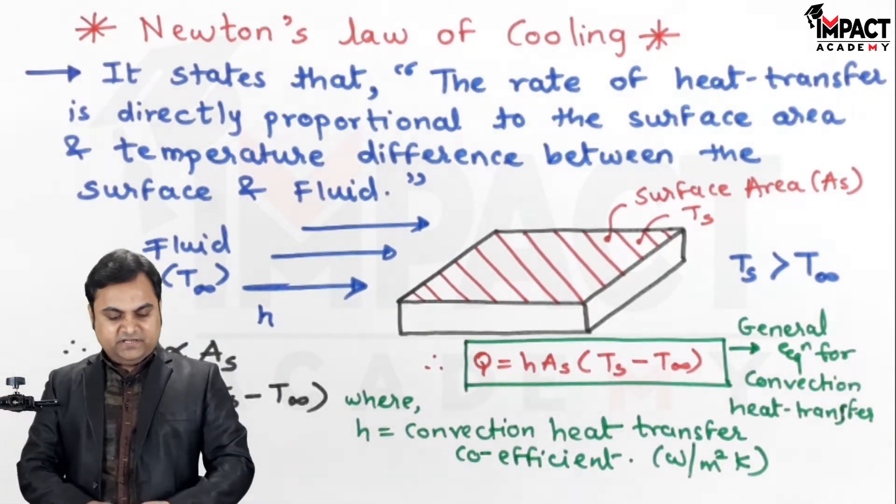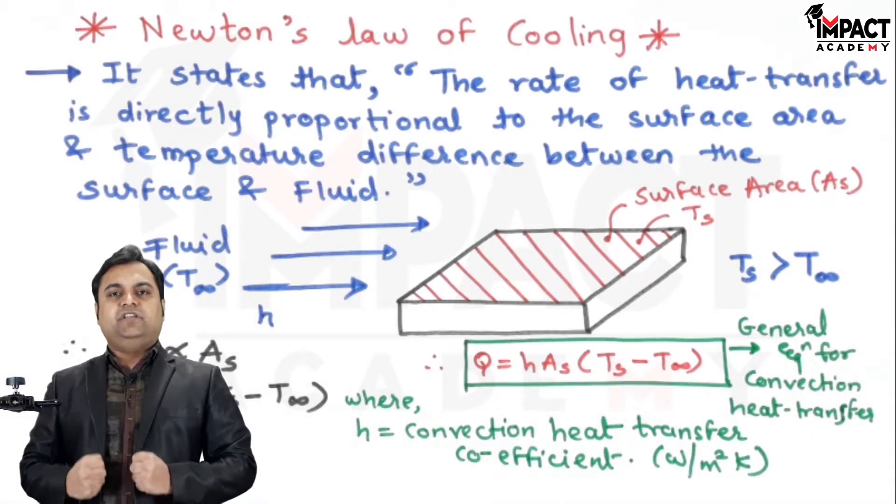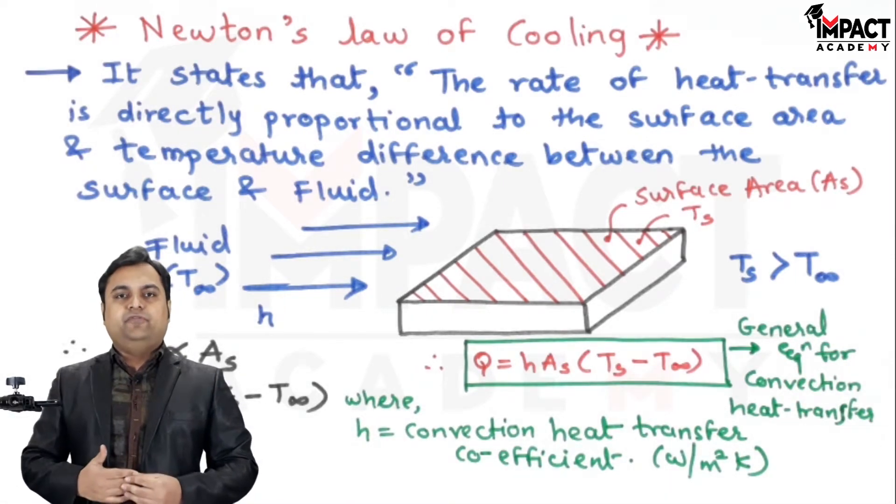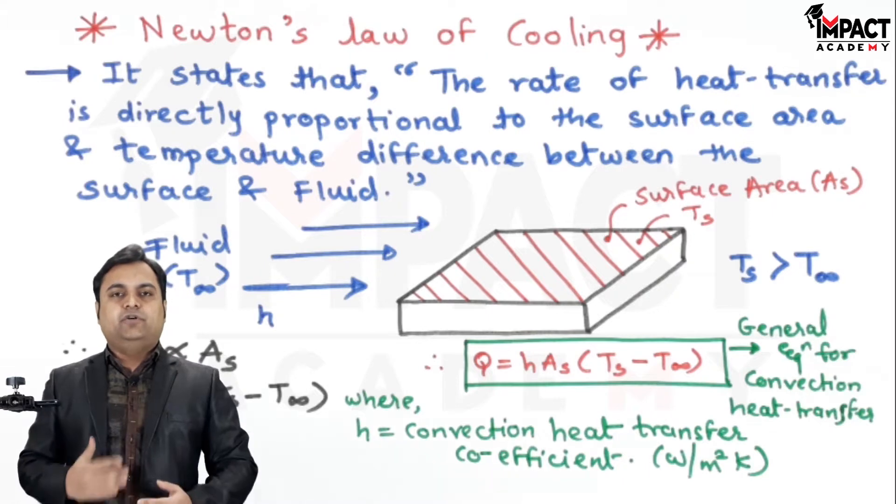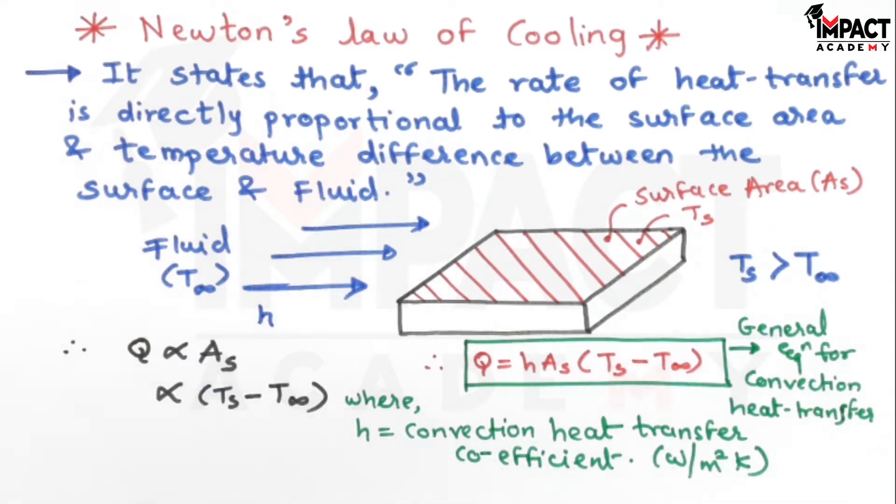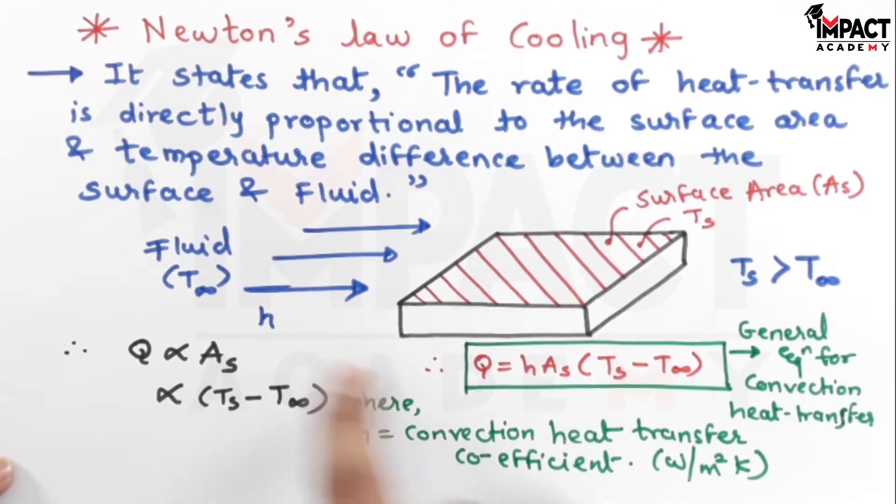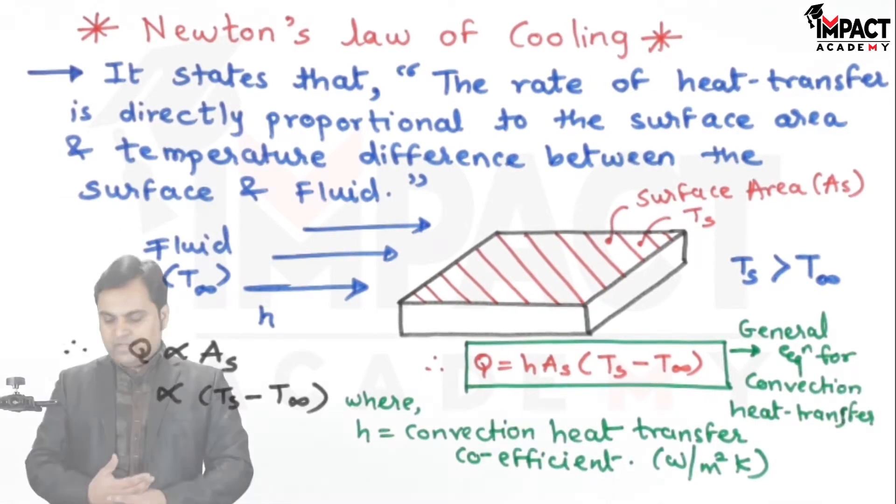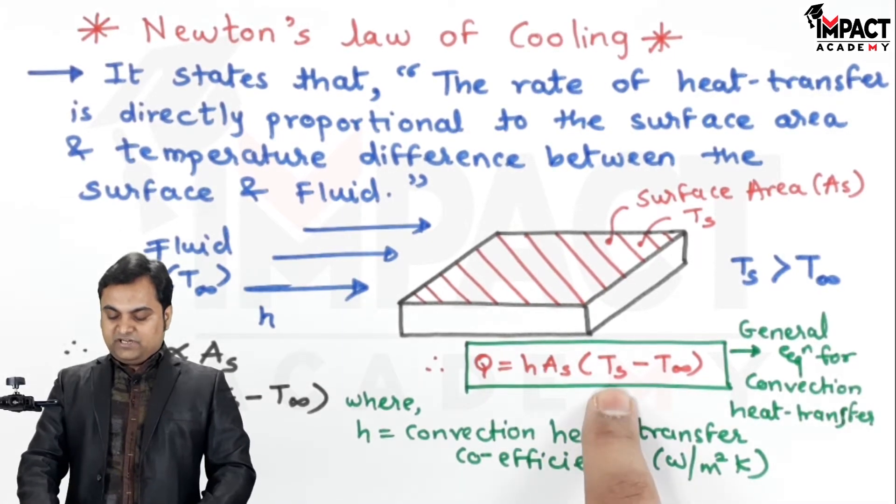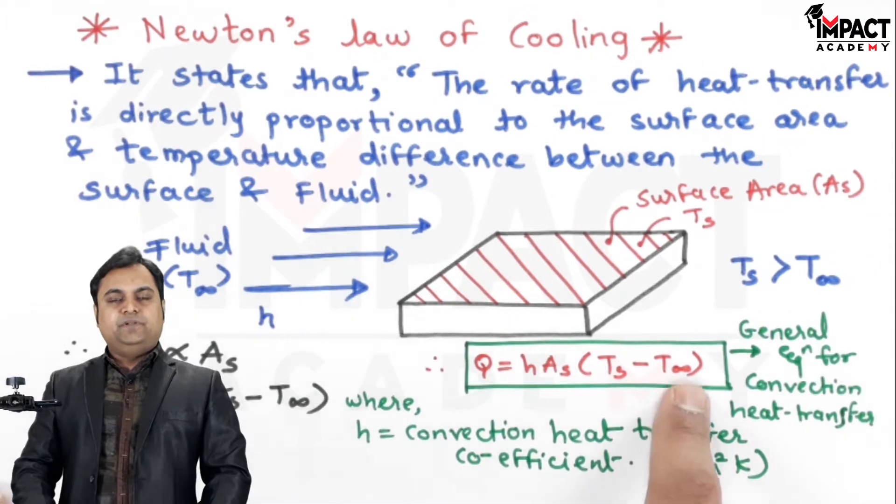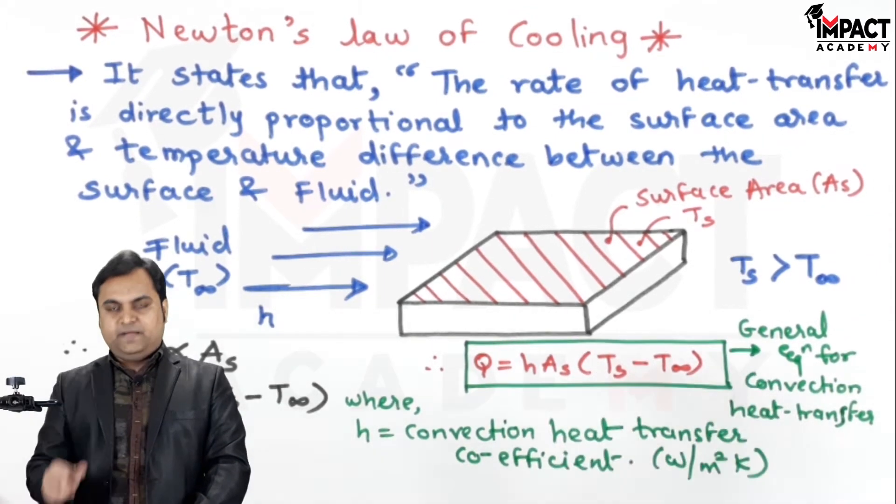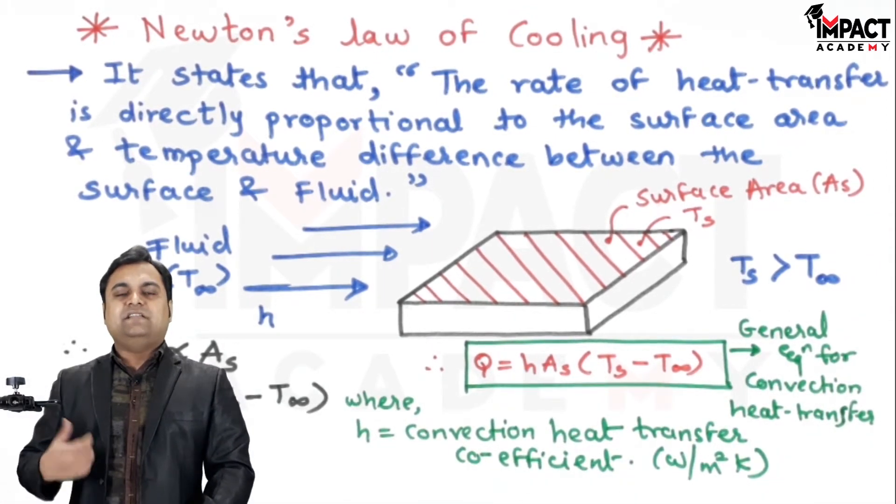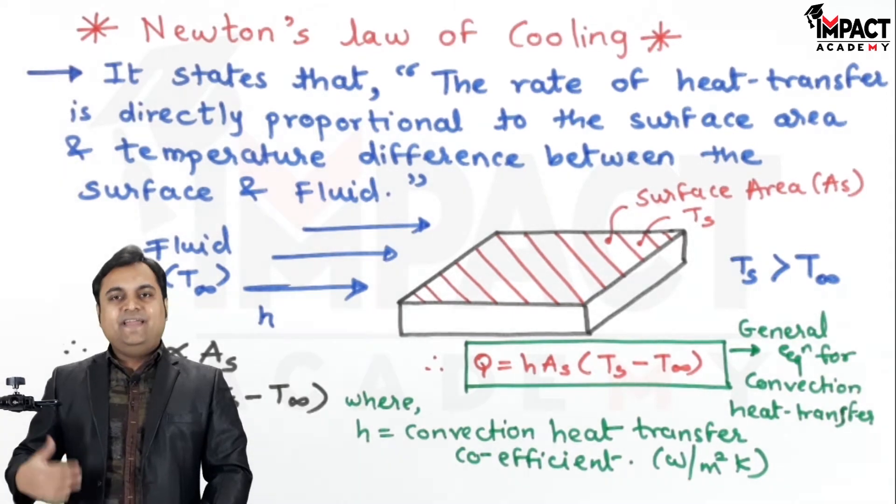Now, here it is clear that in case of convection if we want to have more amount of heat transfer or fast rate of heat transfer, in that case we have to have such a fluid whose H value is higher or greater because H is directly proportional to Q. Then at the same time we should have a large surface area and this temperature difference should be as large as possible in order to get a higher rate of heat transfer.